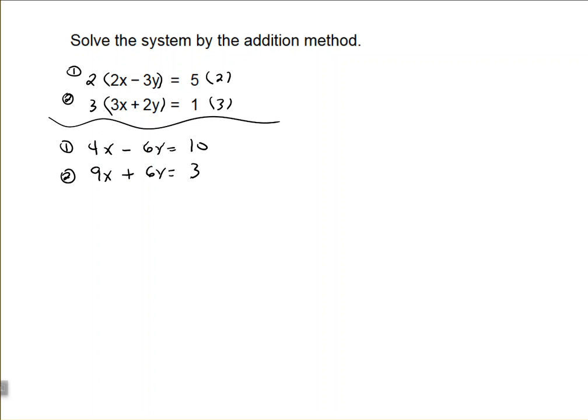So, again, after you get that combination to where one of your variables has opposite coefficients, then you want to add the equations together, and that will eliminate one of your variables.